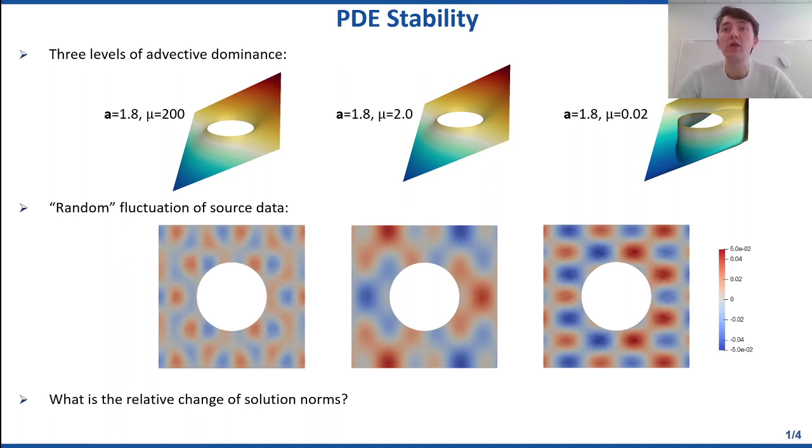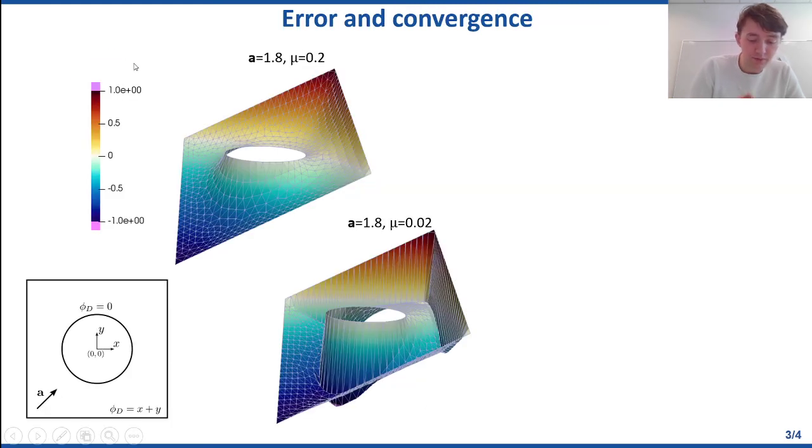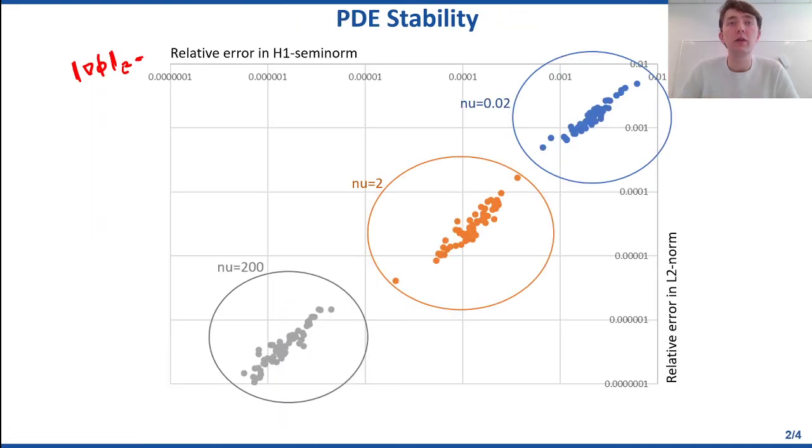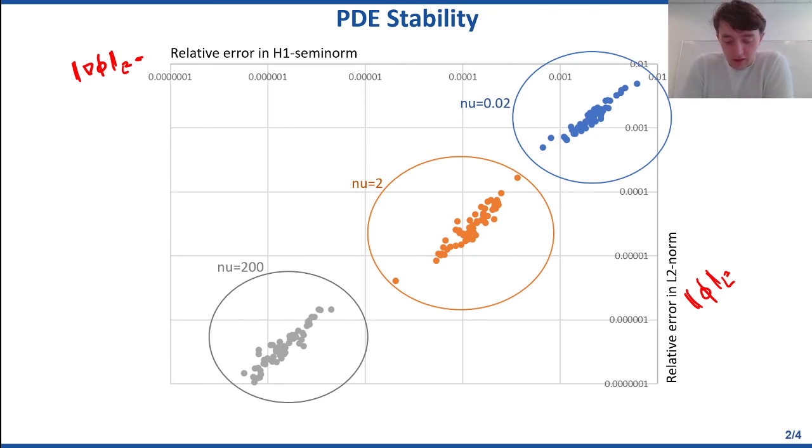So the question then becomes, how much does that change the solution? And as we expect from our analysis from just a second ago, we expect that if we have this advection-dominating case, the one on the right-hand side, that's going to lead to a much more sensitive solution than the one on the left. And I've done this for 60 different types of forcing functions. I'm plotting here the change in the L2 norm and the change in the H1 semi-norm. The H1 semi-norm is purely the gradient of phi in L2. And of course the L2 norm itself is just phi in L2.